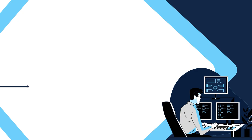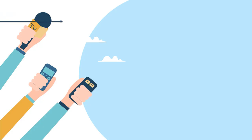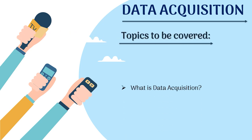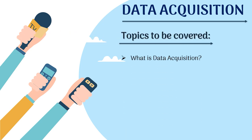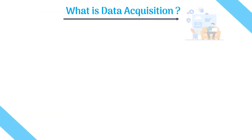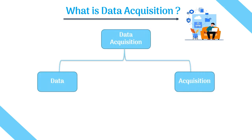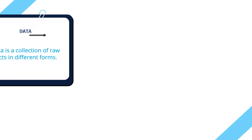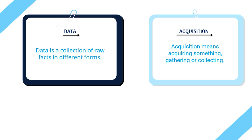Hello everyone, continuing the project cycle series. In today's video we are going to discuss data acquisition. The agenda covers: what is data acquisition, what is data, classifications of data, data features, and data sources. Data acquisition is made of two words — data and acquisition. Data is a collection of raw facts in different forms, and acquisition means gathering or collecting. Together, data acquisition is the process of collecting accurate and reliable data to work with.